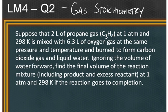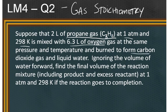The first thing we need to do is orient ourselves and figure out exactly what this question is asking and how we need to answer it. We're given 2 liters of propane gas at 1 atmosphere and 298 Kelvin mixed with oxygen. It's going to form carbon dioxide and water. We need to figure out the final volume of the reaction mixture, which includes the product and the excess reactant, ignoring any water. To do this, the first thing we need is a balanced chemical equation.